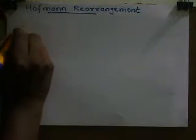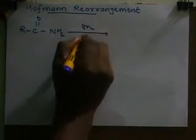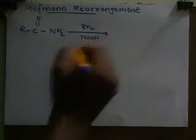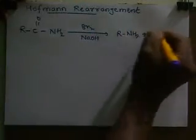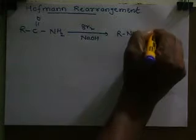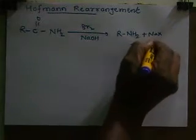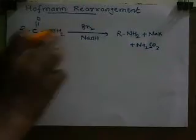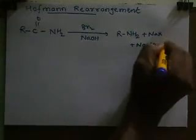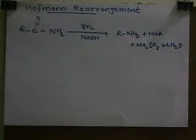Unsubstituted amides on treatment with halogen like bromine in presence of a strong base like NaOH give primary amines with one carbon atom less. Along with the primary amine, sodium halide, Na2CO3, and two water molecules are also formed. That is why we call this one carbon atom less.